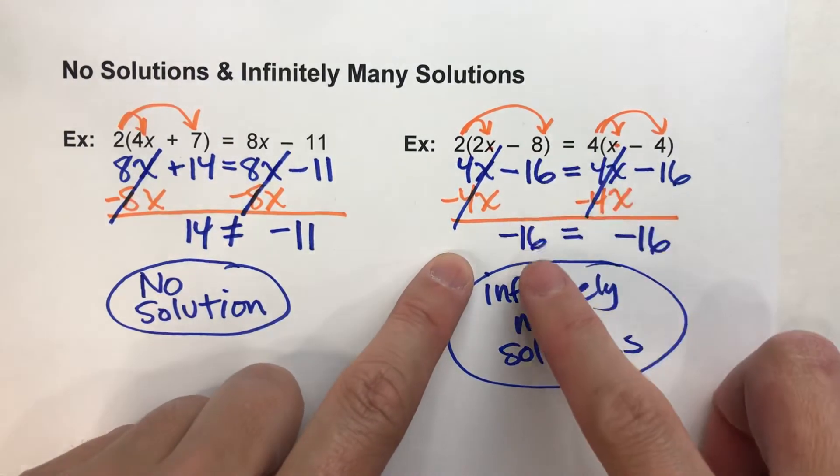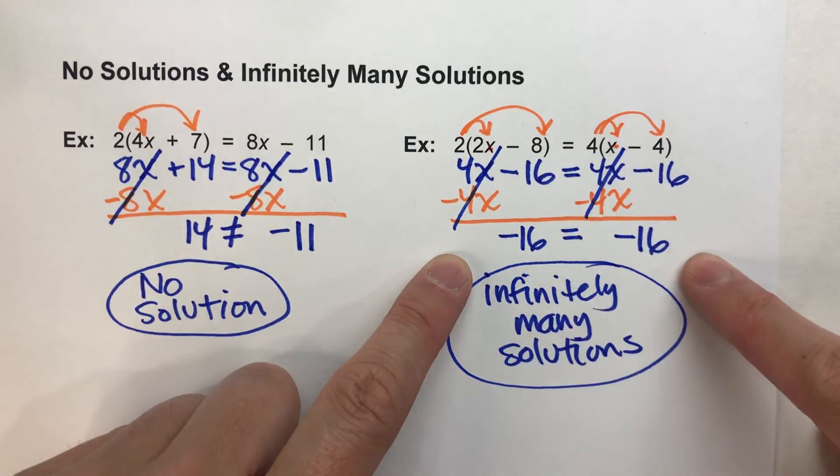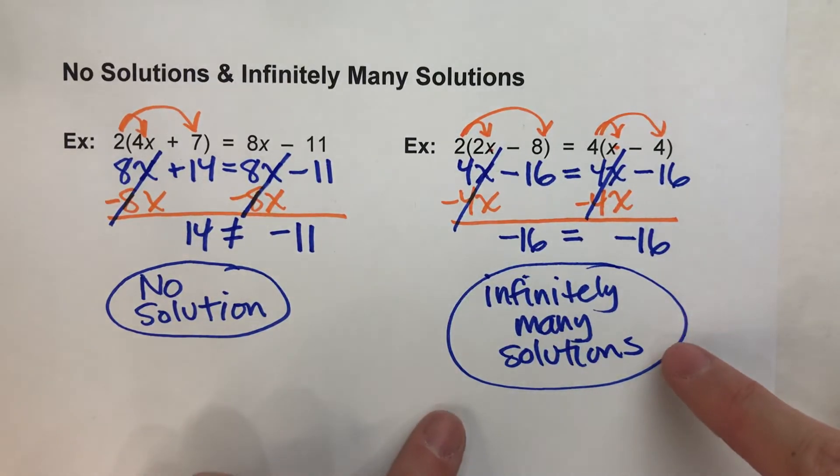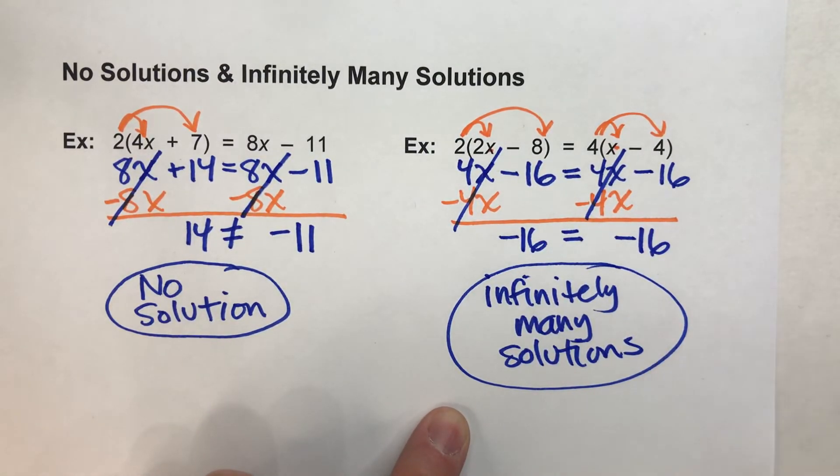Or do you have it where you have a number is equal to itself? In that case, it's always true, so there are infinitely many solutions.